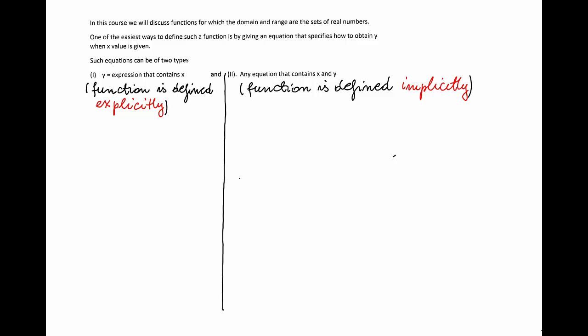Such equations can be of two types. The first type is the equation of the form y equals expression that contains x. If the function is defined that way we say that the function is defined explicitly, or it can be defined by an equation that contains x and y that is different from type 1, and in this case we say that the function is defined implicitly.